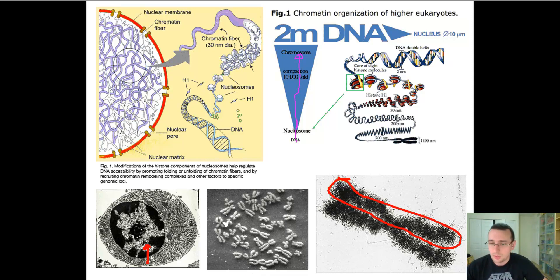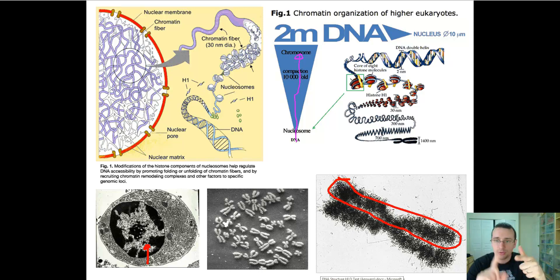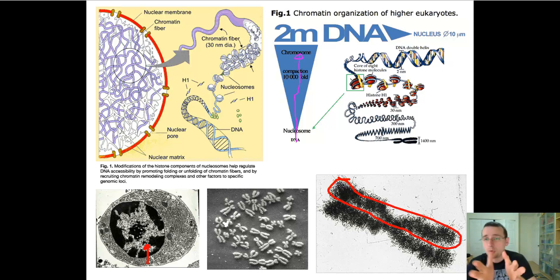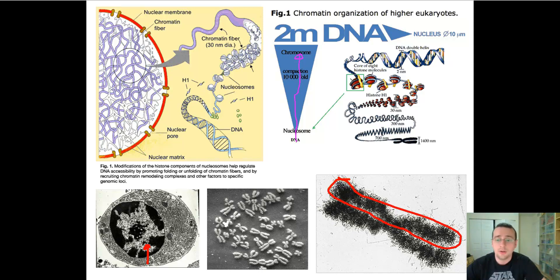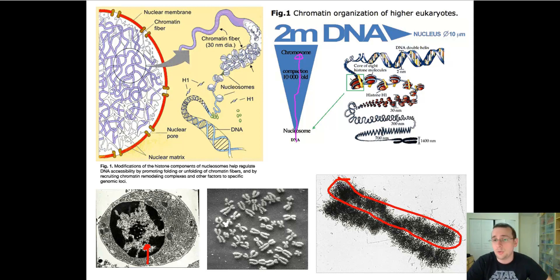So to summarize: double helix coils around histones to form nucleosomes, then coils, then supercoils, then chromatin fibers — which can be normal chromatin that is open and being used, called euchromatin, or very, very coiled-up chromatin called heterochromatin which is not being read — or, during division, even more coiled into actual chromosomes.